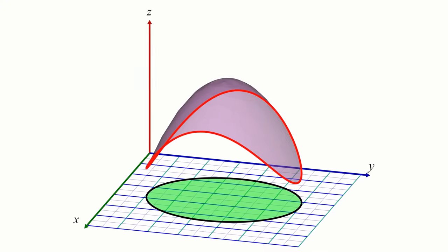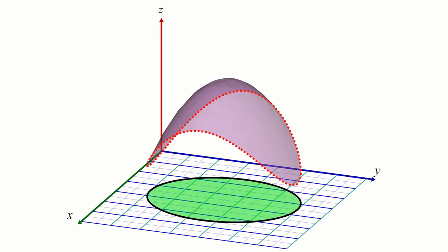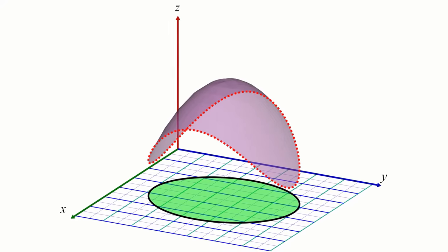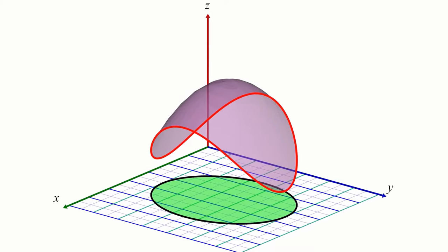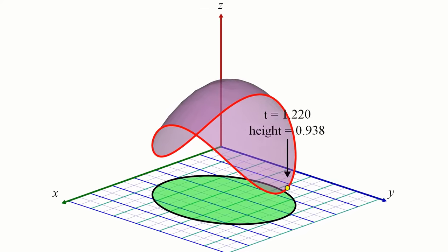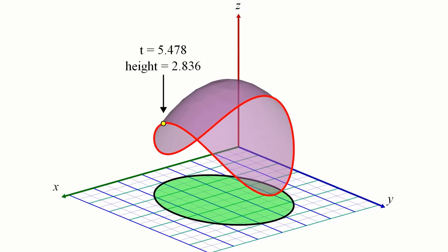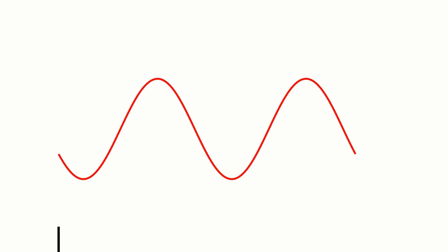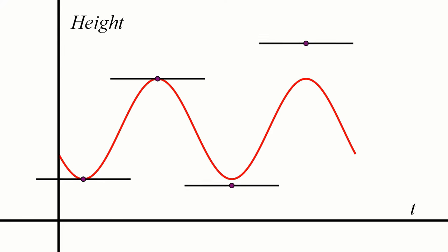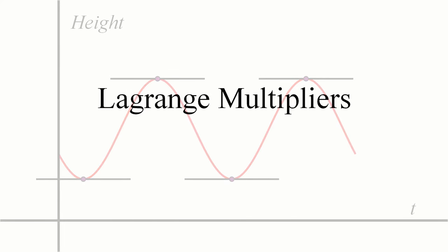But with multivariable functions, the boundary is a curve, and a curve contains infinitely many points, which means we can't just plug all of them in one by one to see which is the highest and which is the lowest. One way you could deal with this is to parametrize the curve, which means varying a parameter t that moves a point along the curve and keeping track of the height of the point as t varies. This would turn the problem into a single variable calculus problem. Although that's one way to do it, the method we'll look at in this video — the method of Lagrange multipliers — is a bit different, allowing us to avoid the hassle of parametrizing the curve.